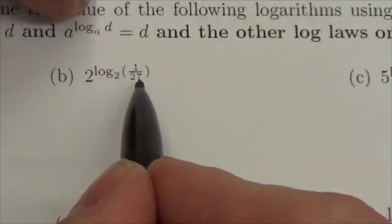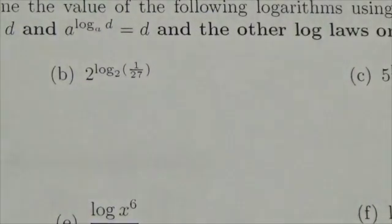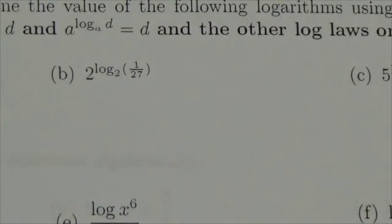Now notice 1 over 27, 27 is not a power of 2. I'm not going to be able to simplify that expression by evaluating that logarithm.